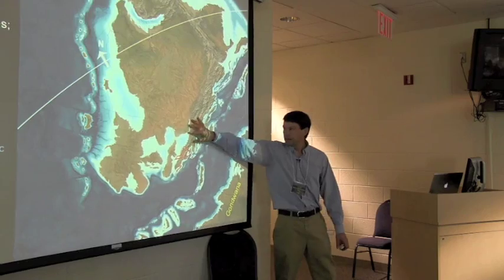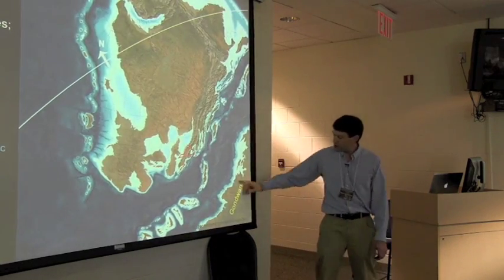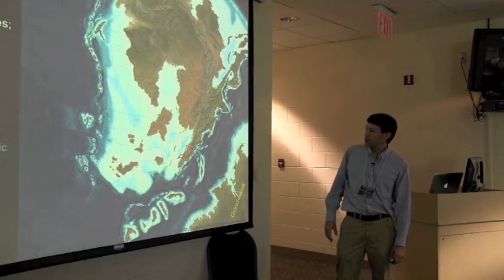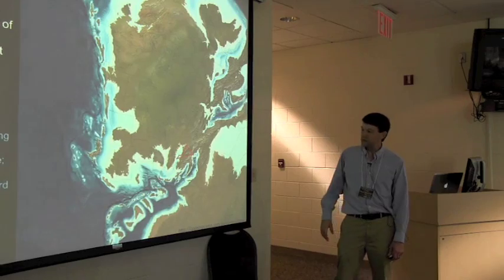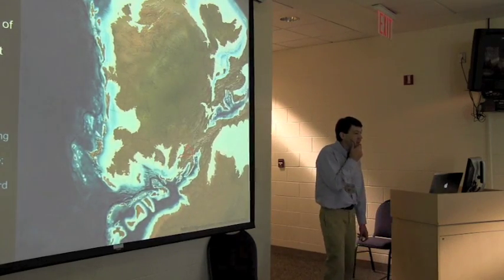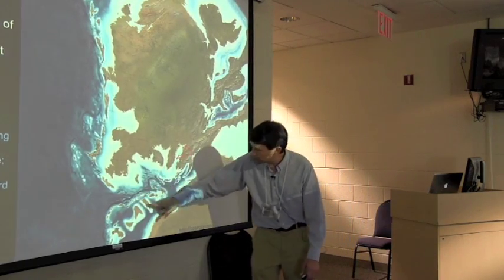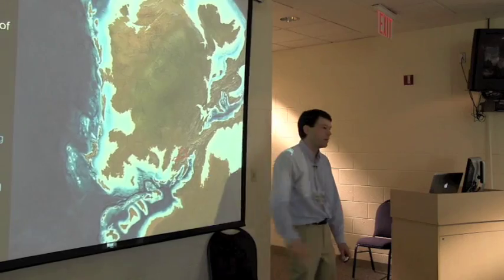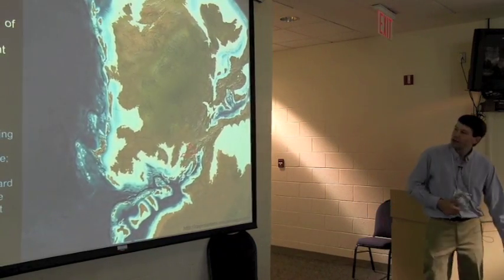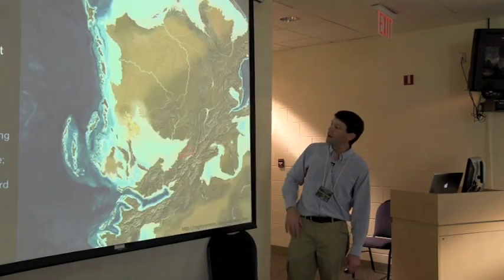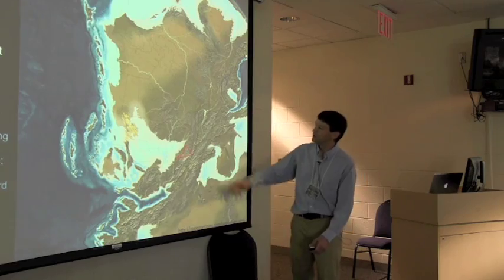But from our very North American-centric view we'll say okay, here comes Gondwana and it's going to get closer and closer and then smack. Gondwana collides with eastern North America and then also collides to the south, producing the Ouachita Mountains as Bob mentioned. This is what produces the supercontinent of Pangaea.